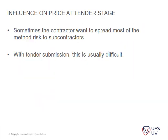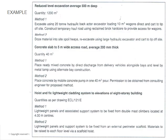The method statement has an influence on the tender price, plant selection, and materials. At tender stage, a contractor may want to spread most of his risk to subcontractors through the method statement. With tender submissions, this is usually difficult because subcontractors at tender stage don't usually give the main contractor a method statement, though a mechanical or electrical engineer might assist.